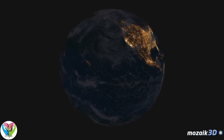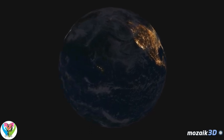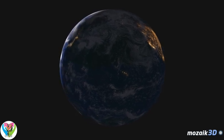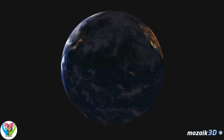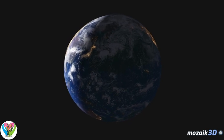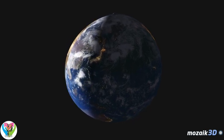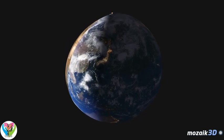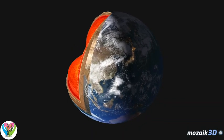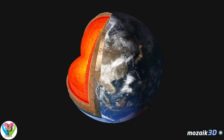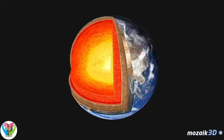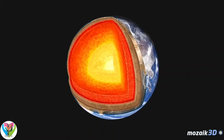The atmosphere of the Earth is made up mainly of nitrogen (78%) and oxygen (21%). Other important components are water vapor, argon, and carbon dioxide. At surface level, the average pressure is 1013 millibars. This pressure is called one atmosphere.